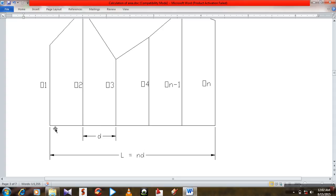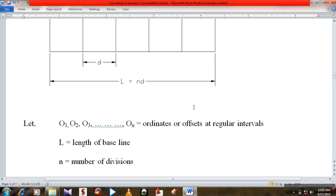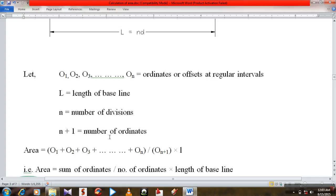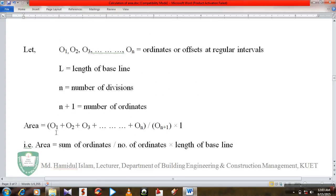The length of the baseline, the number of divisions, that is 1 division, 2, 3, 4, 5 divisions, and number of ordinates 1, 2, 3, 4, 5, 6. Total area O1 plus O2 plus O3 divided by N plus 1.